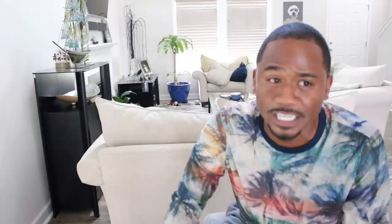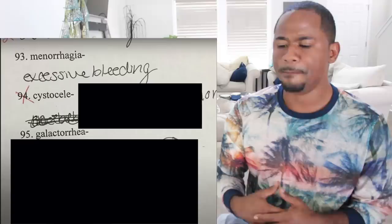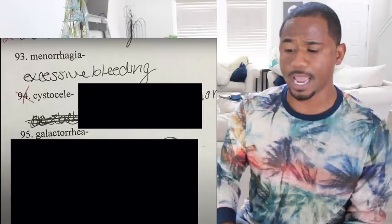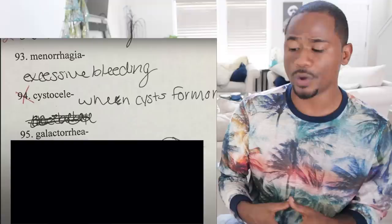How are these kids knowing what an orphanage is, what athlete's foot is — all this terminology at a young age? 'Menorrhagia' — yeah I wouldn't know that one. Oh well, this kid knew: 'excessive bleeding.' What is a sister? 'Cyst form.' What is galactorrhea? 'Space herpes.' You're telling me that 'cyst form' was wrong but 'space herpes' was right?